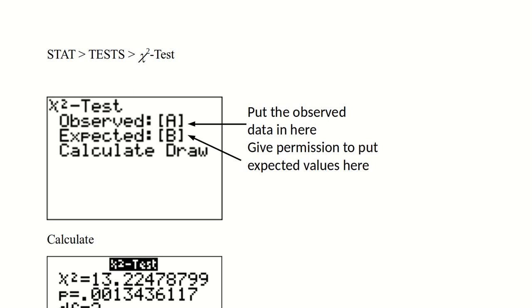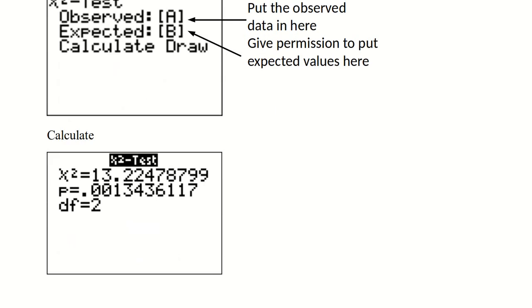Once we've entered that data into a matrix, we can go into the stat menu over to tests and down to the chi-squared test. The chi-squared test expects the observed data to be in one matrix. The default is A, but you can change that to whichever matrix you put that data into and then leave room or give the calculator permission to put the expected values in a different matrix. If you don't have anything in matrix B, then that's a perfectly fine choice. When you calculate, you'll get your chi-squared, you'll get your p-value and the degrees of freedom.